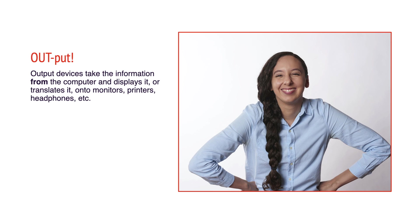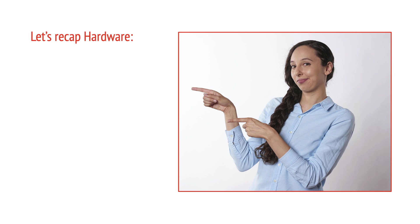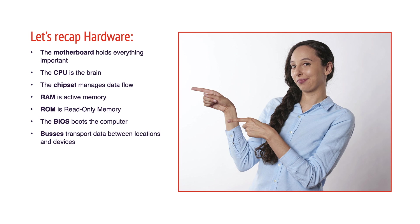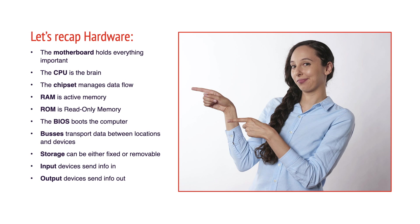Output devices take the information from the computer and display it or translate it onto monitors, printers, headphones, etc. Let's recap hardware: The motherboard holds everything important. The CPU is the brain. The chipset manages data flow. RAM is active memory. ROM is read-only memory. The BIOS boots the computer. Buses transport data between locations and devices. Storage can be either fixed or removable. Input devices send info in. Output devices send info out.